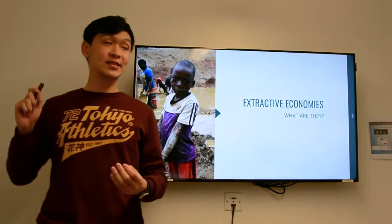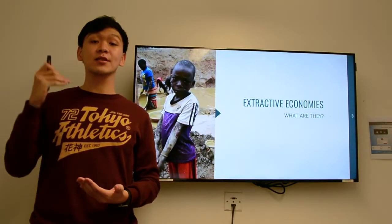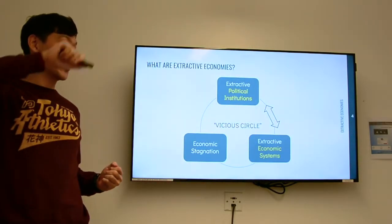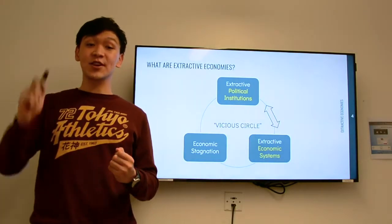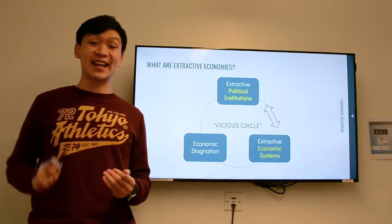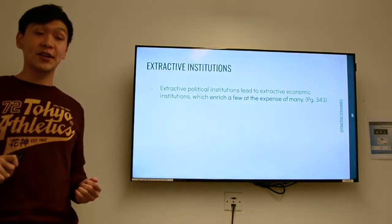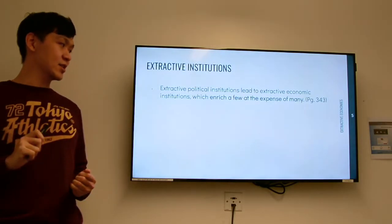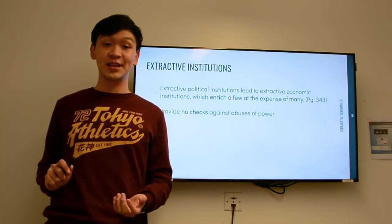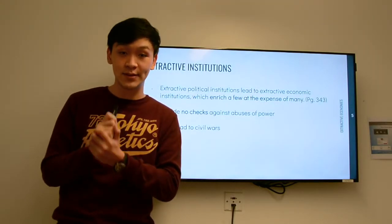In the case of Chapter 12, they use the term extractive economies to explain why some nations are not able to break out of the chain of poverty. Extractive economies are born of extractive political institutions where the elite exploit resources within the country and, more often than not, its people for their own gain. This has resulted in economic stagnation. According to the book, extractive political institutions lead to extractive economic institutions which enrich a few at the expense of many. They often provide no checks and balances against abuses of power and they often lead to civil wars.